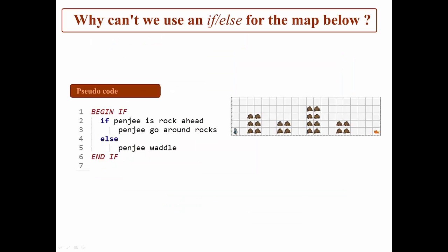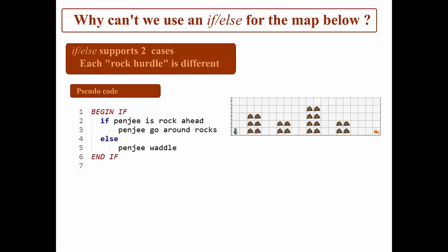So going back to what I said before, why can't we use an IF-ELSE for the map below? Because IF-ELSE supports only two cases, we need an IF-ELIF-ELSE to support the three different types of rock hurdles we experience here.